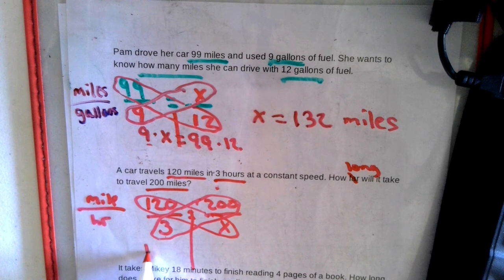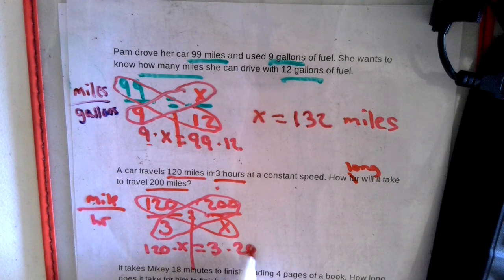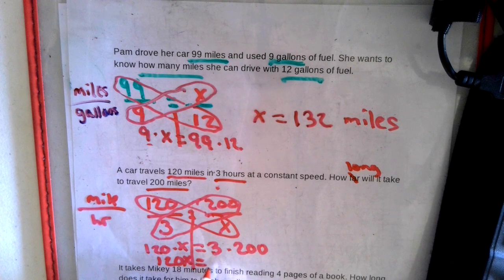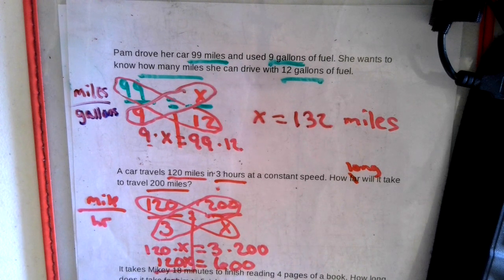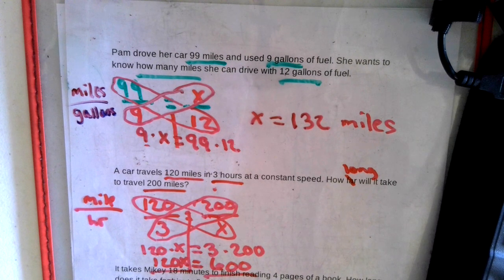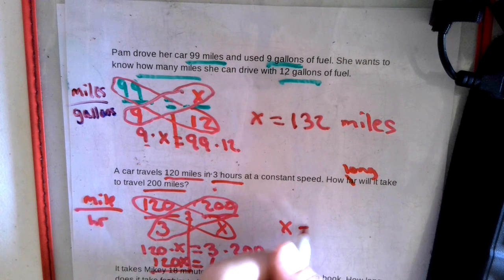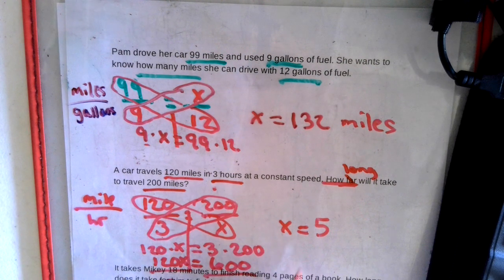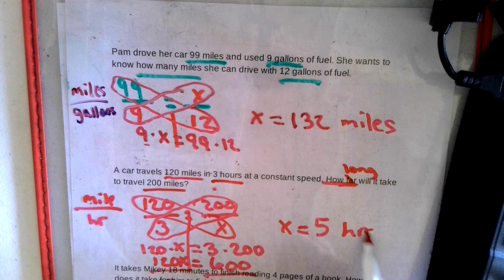So we have 120 times X equals three times 200 — the diagonals. Number and letter shoved together: 120X equals 600. Divide by the 120. So we get 600 divided by 120. We get X equals five. And we're looking for how long, so that's five hours.